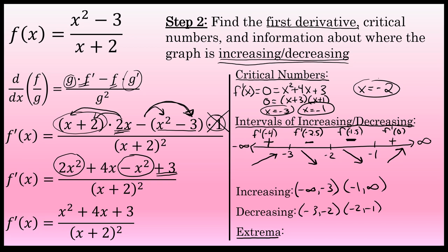Extrema are high or low points in the graph. Extrema can occur at critical numbers where the derivative was equal to zero, so in this case, negative 3 and negative 1 are possible extreme values. Remember, x equals negative 2 was a critical number, but that's a vertical asymptote — a discontinuity. There's no point at x equals negative 2; evaluating f of negative 2 gives undefined. So negative 3 and negative 1 are the only possible extreme values.